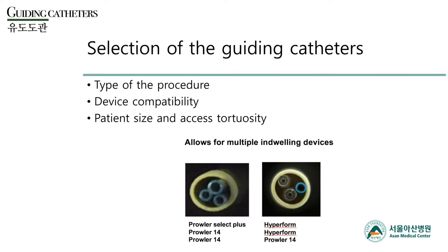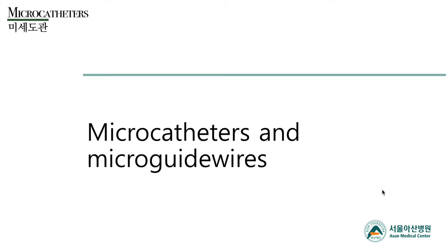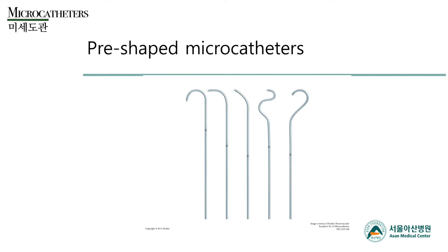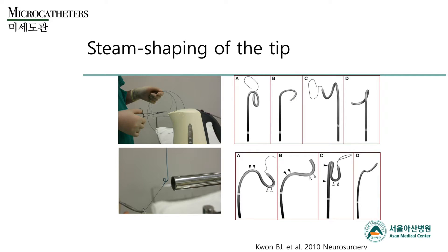Guiding catheters are selected according to the type of procedure and device compatibility. Sometimes we put not only one device but two or even three devices within the guiding catheter. The second key component is microcatheters and microguide wires. Microcatheters for neurovascular systems are not that different from regular microcatheters except for the length — total length is longer because brain vessels are far more distal than other body target organs. The distal segment is flexible because of the need to adapt to the tortuosity of intracranial arteries, and sometimes the tip is shapeable and sometimes it has pre-shaped tips.